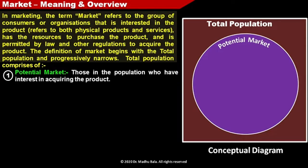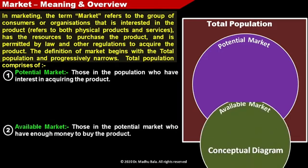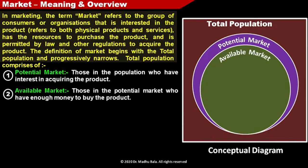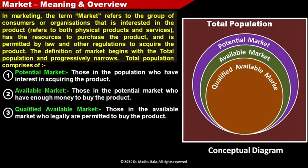Available market refers to those in the potential market who have enough money to buy the product. They want to buy the product and also have sufficient money to buy it.